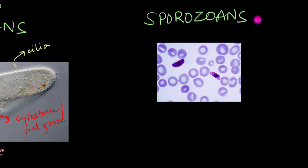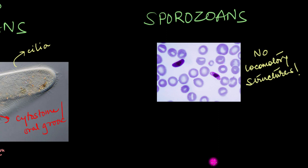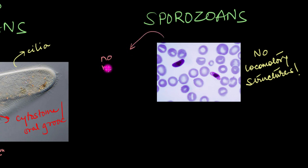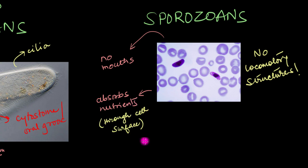The final group on our list is that of the sporozoans, which are parasitic, spore-producing protozoans with no locomotory structures. Sporozoans don't have any flagella, cilia, or pseudopodia. Instead, they use a very specific gliding technique to move from one place to another. All sporozoans also lack mouths or mouth-like structures because they absorb all necessary nutrients through their cell surface — so no ingestion of food, no mouths whatsoever.